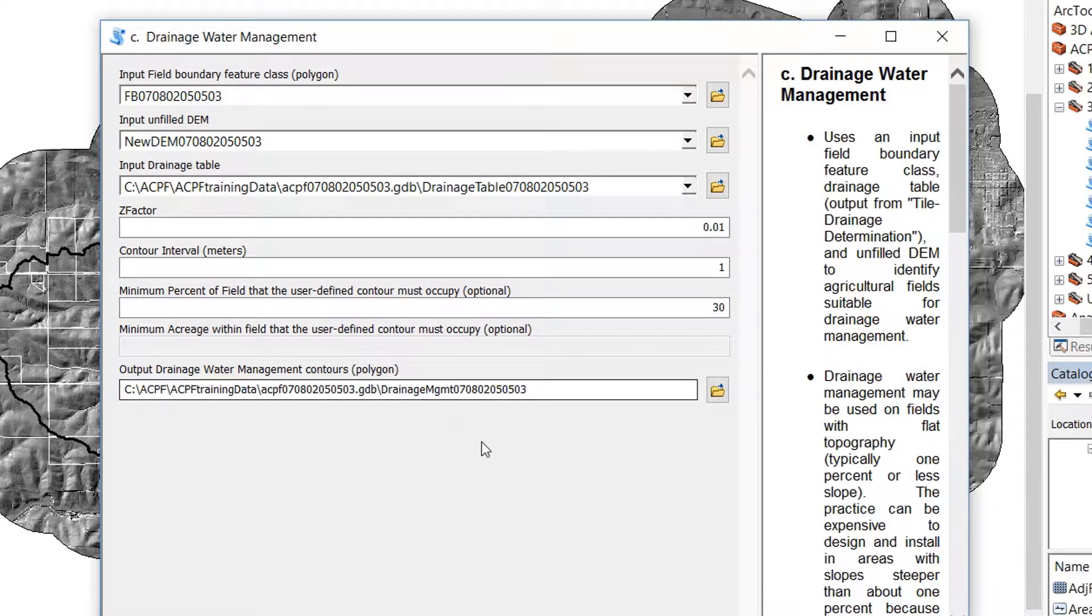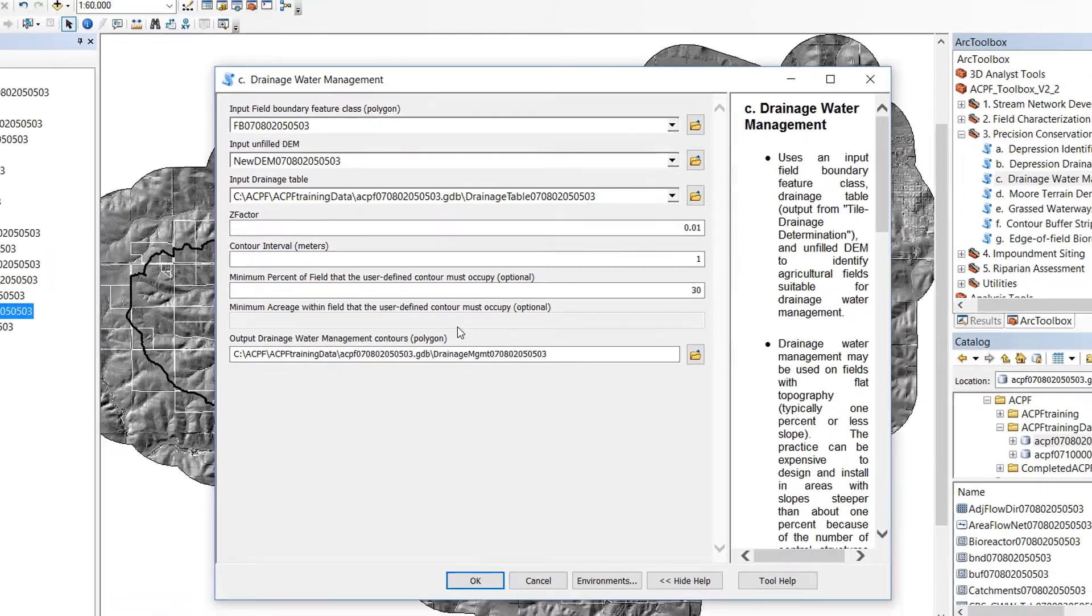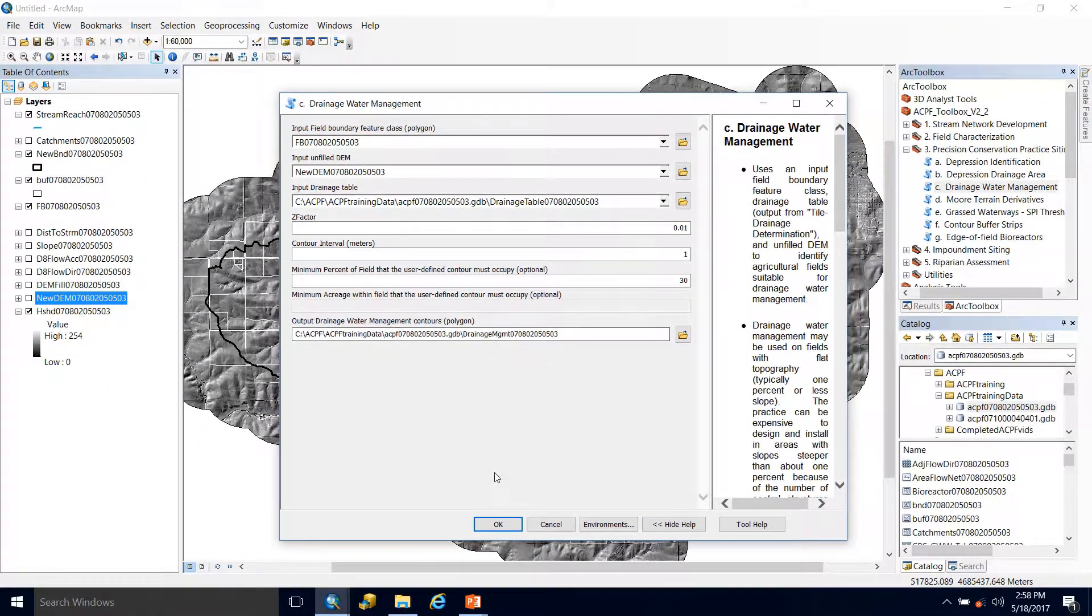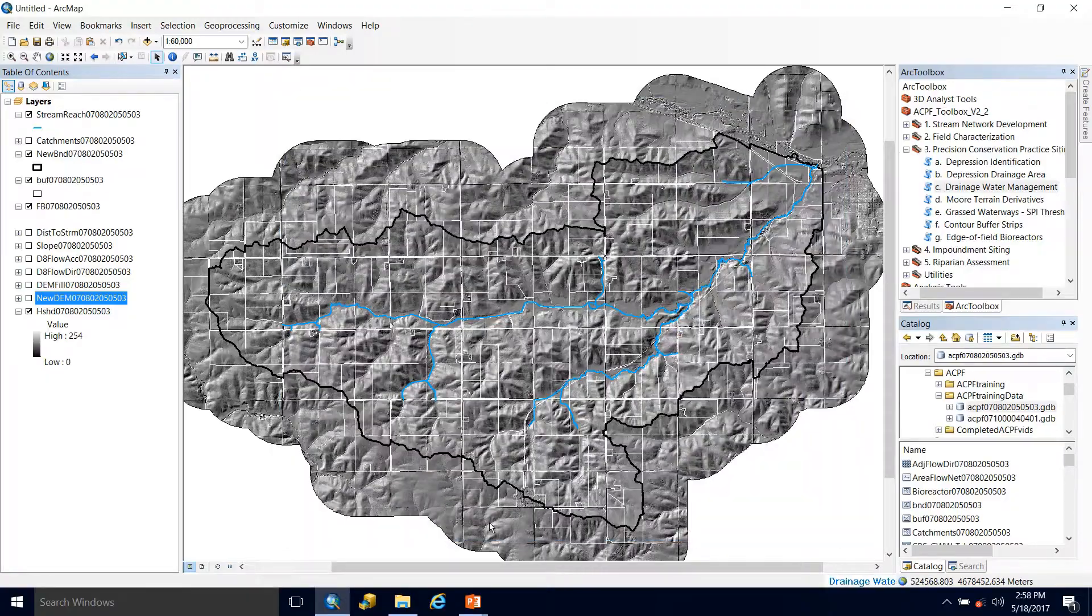And then from this tool, we're going to get the one output of the drainage water management polygon, which will show us the area that if this tool was put in, this is what it would treat. So we'll hit OK. Let it go.